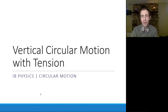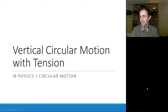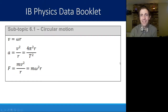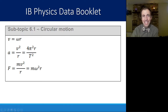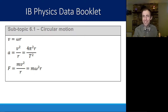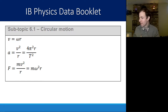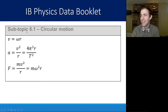Today we're going to look at vertical circular motion with both tension and, in the next video, with surfaces. As a reminder, we are taking a brief detour into Topic 6. IB Physics has most of the motion and forces content in Topic 2, but Topic 6 is all circular motion. So in your data booklet, you'll find these equations in Topic 6 rather than Topic 2.